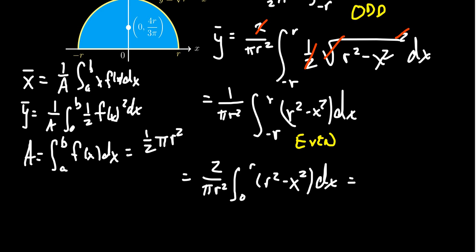So integrating our anti-derivatives, we're going to get r squared x minus x cubed over three, as you go from zero to r. Plug it in zero makes just everything disappear, which is really nice. Plug it in r. So we get two over pi r squared. We're going to have an r cubed here.